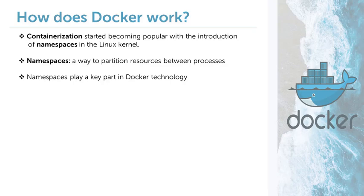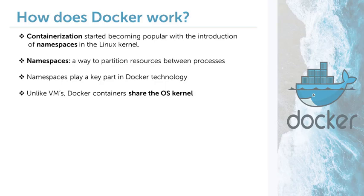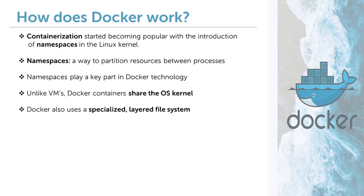Now, unlike a VM which simulates the entire operating system, Docker containers share the kernel — the most important bits of the operating system — and only need all the other things they require, like libraries and specific OS binaries, to be simulated. As such, Docker containers end up being much closer to the hardware than VMs, which means they usually run faster and they boot up a lot faster. Docker also uses a special file system for the containers, and in conjunction with its image system, containers end up using a lot less memory and hard disk space than VMs.